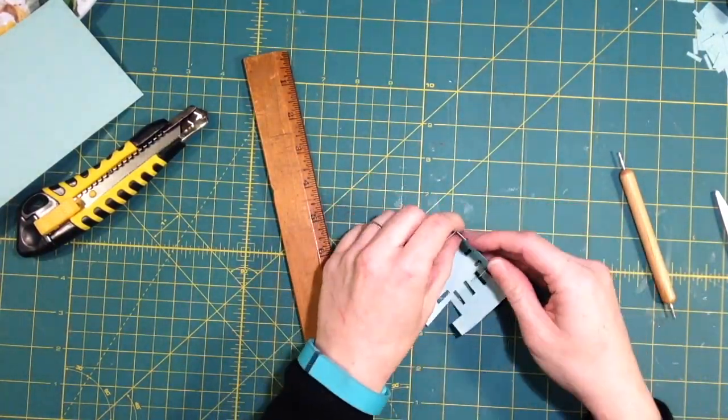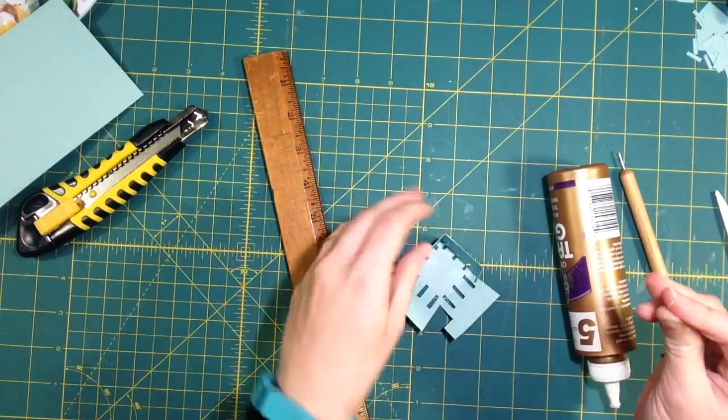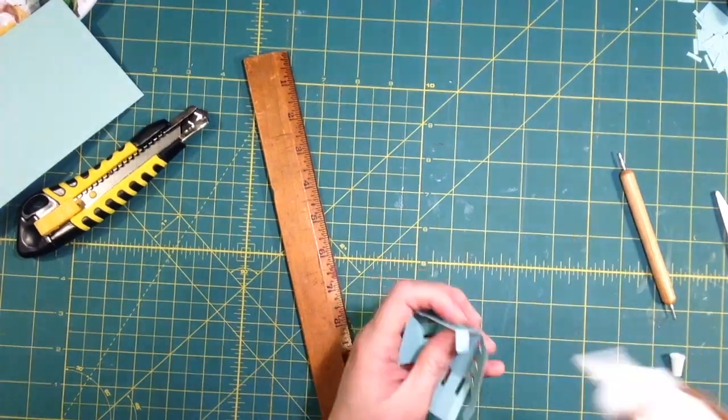Fold everything you scored and I'm going to use tacky glue. I just put a little on the tab and hold it for a second.